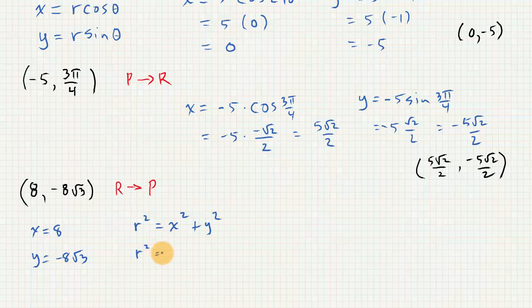So r squared is going to be 64 plus 64 times 3. When we square this, this is a product. So we square the negative 8 to get 64. We square the root 3 to get 3.